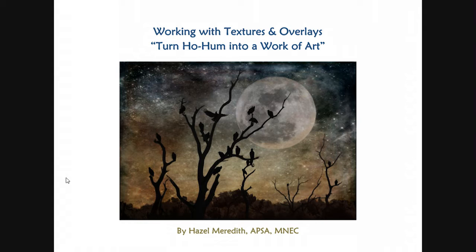This is actually a composite of several images. The birds in the tree branches were shot in Florida in the middle of the day in bright sunlight. That doesn't look like a sunlight photograph. Well, that's because it was combined with some textures and the moon to turn it into something different. The moon was shot here in Stratford, where I live, a few years ago — we had a super moon — and then I used textures to create the sky. That's two or three textures layered in there.